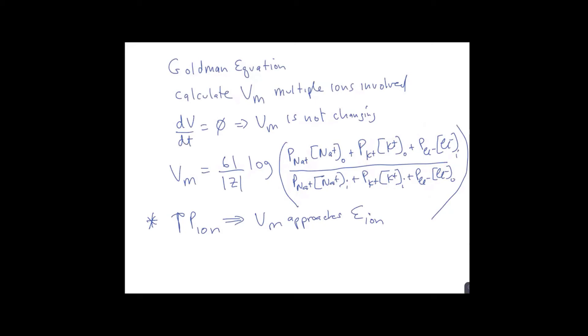And I would encourage you to just plug some different numbers in, change the values of the permeability, and you'll be able to see that it does approach the equilibrium potential for that ion. And the reason why this is important is that at rest, we know that potassium has a high conductance, much higher than sodium. And this equation actually helps understand why the membrane potential at rest is close to the equilibrium potential for potassium.